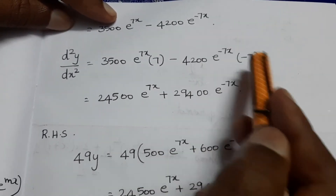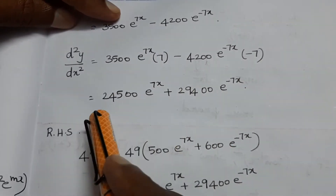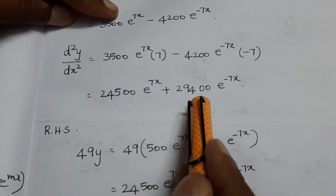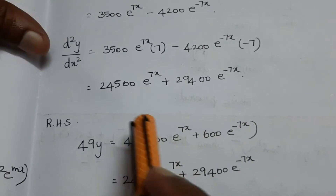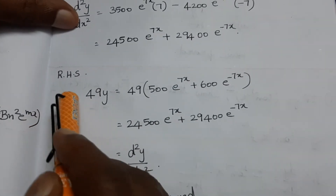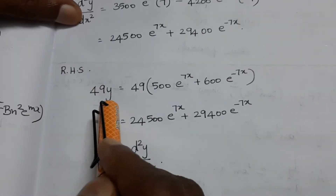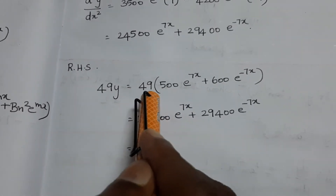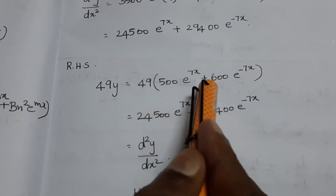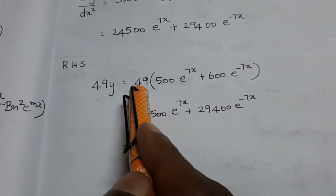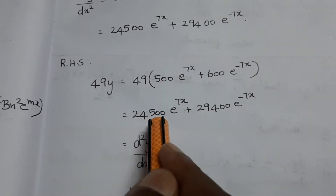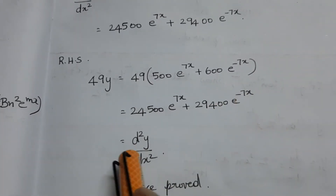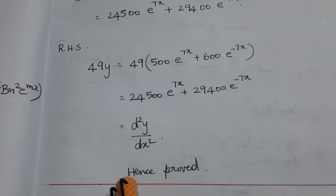Differentiating again, d²y/dx² equals 500 times 49·e^(7x) plus 600 times 49·e^(-7x), which equals 24,500·e^(7x) plus 29,400·e^(-7x), and this equals 49 times y equals 49(500·e^(7x) plus 600·e^(-7x)). Hence proved.